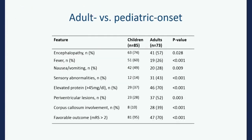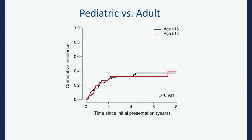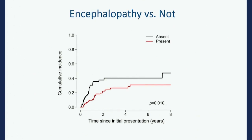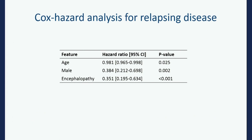Of people who presented with relapsing disease, ataxia was more common. Fever and meningitis were more likely to associate with a one-time ADEM presentation. Both adults and children did really well, but children do even better — 95% of children had a good functional outcome. Children are more likely to have encephalopathy; adults may give a better history. On composite analysis, females are more likely to relapse.